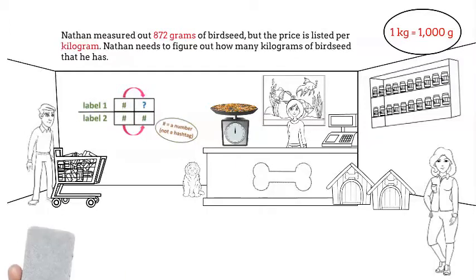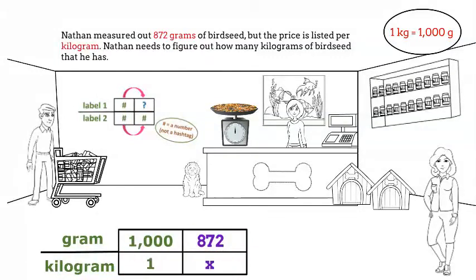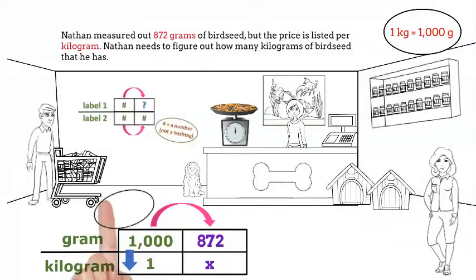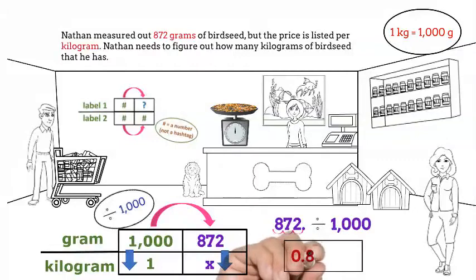Let's draw our graphic organizer. We'll set it up as grams to kilograms, so we will have 1,000 to 1. The 872 is grams so it will go in the numerator, and x will be in our denominator. Is there something easy that we can multiply or divide a thousand by to get 872? No. Let's look at the patterns vertically — what can I do to 1,000 to get 1? That's right, I can divide by 1,000. Now we need to divide 872 by 1,000. To divide by 1,000, simply move the decimal point three places to the left. 872 grams equals 0.872 kilograms.